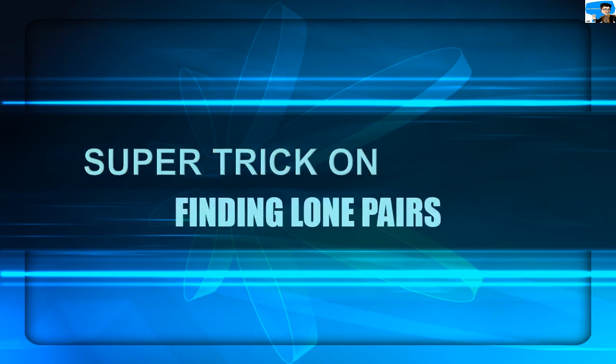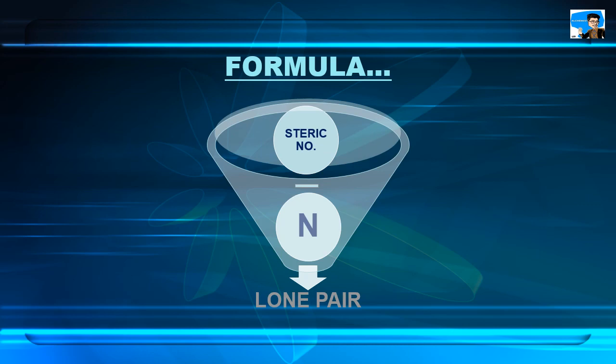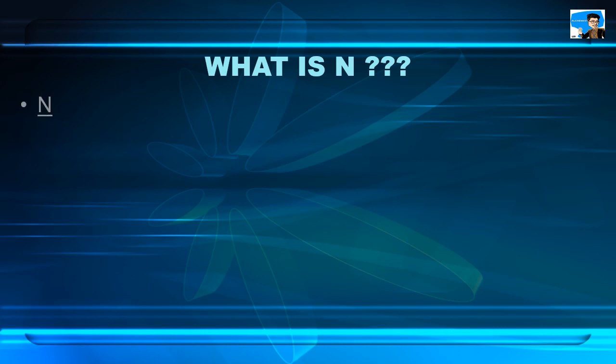I am back with a new trick on how to find lone pairs within a few seconds. First of all, we must know the formula-based trick. Here is the formula: Steric Number minus n equals Lone Pairs. This formula acts as the trick.